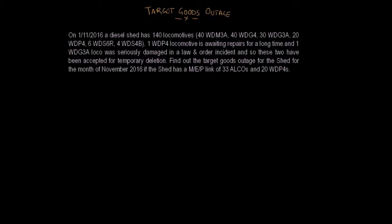Find out the target goods outage for the shed for the month of November 2016, if the shed has a mail express passenger link of 33 locomotives and 20 WDP4s.